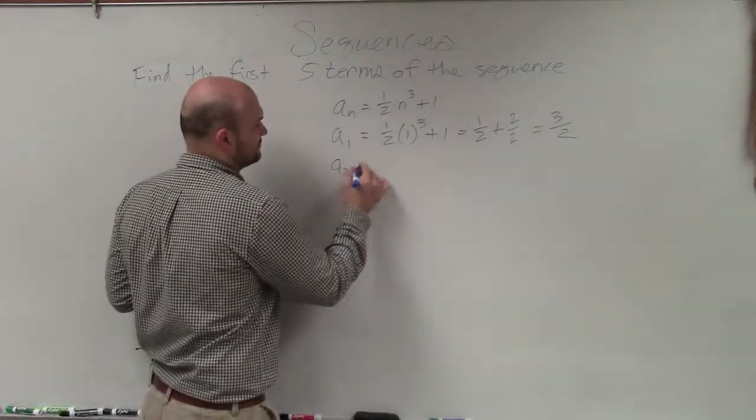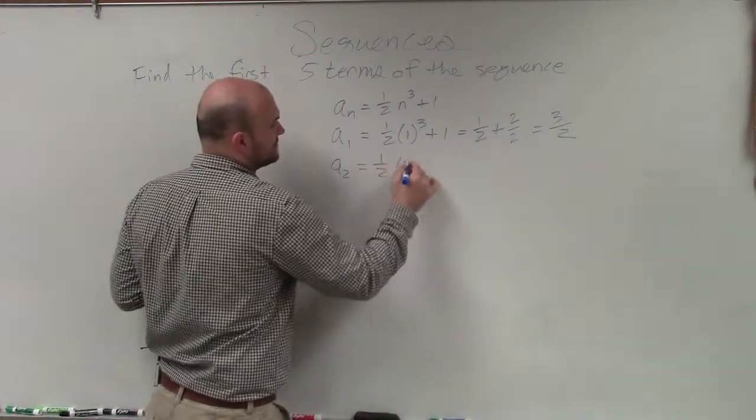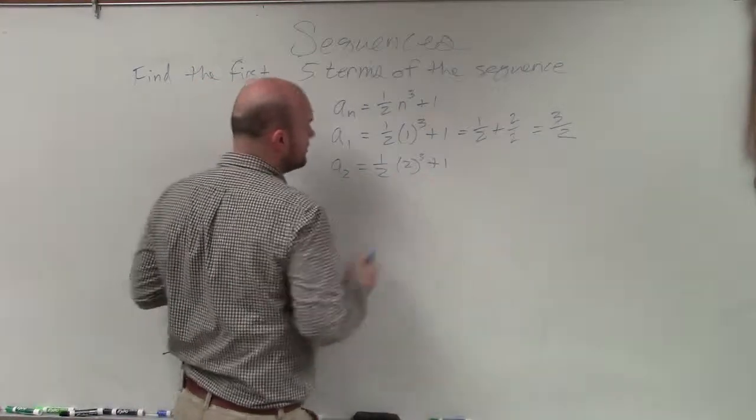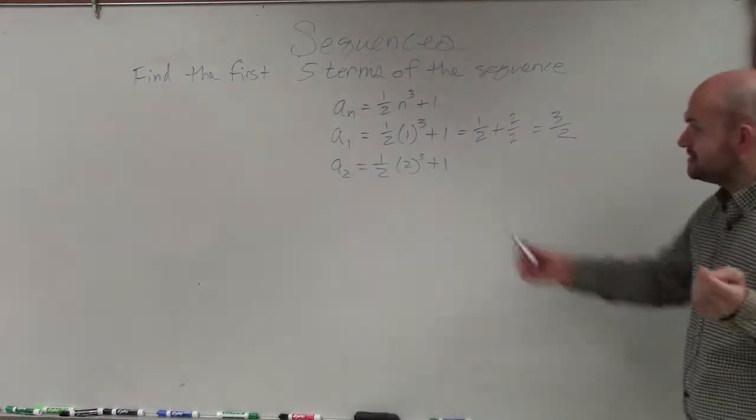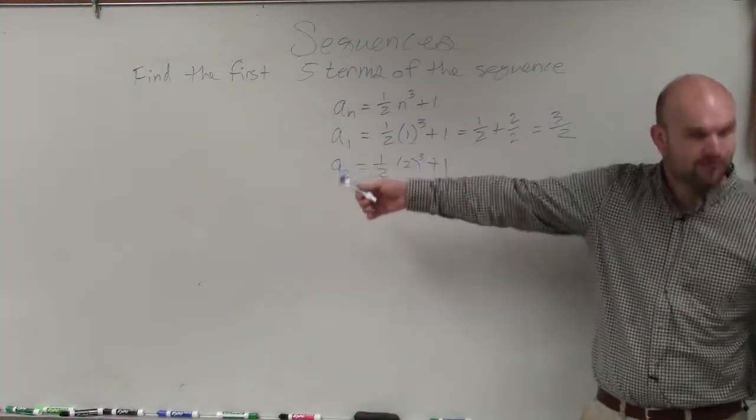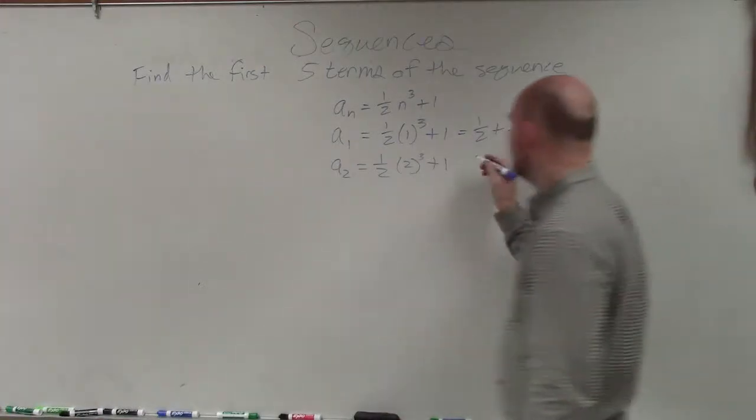All right, so let's go and do 2. So 1 half times 2 cubed plus 1. Well, 2 cubed is 2 times 2 times 2, which is 8. 8 times 1 half, which is 4. 4 plus 1 is 5. Hey, that one's easy.